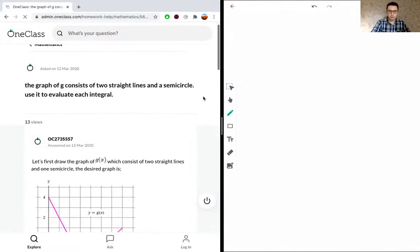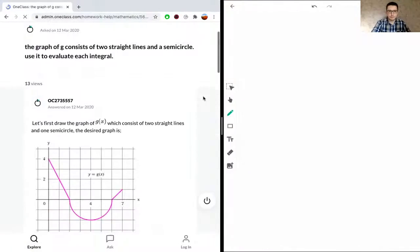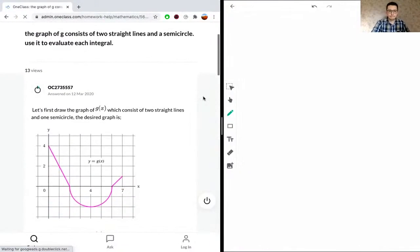Okay, so here we're given a graph and a function. It says the graph of g, so g is the function, g of x consists of two straight lines. We have this straight line over here and then this straight line over here and a semicircle right here.